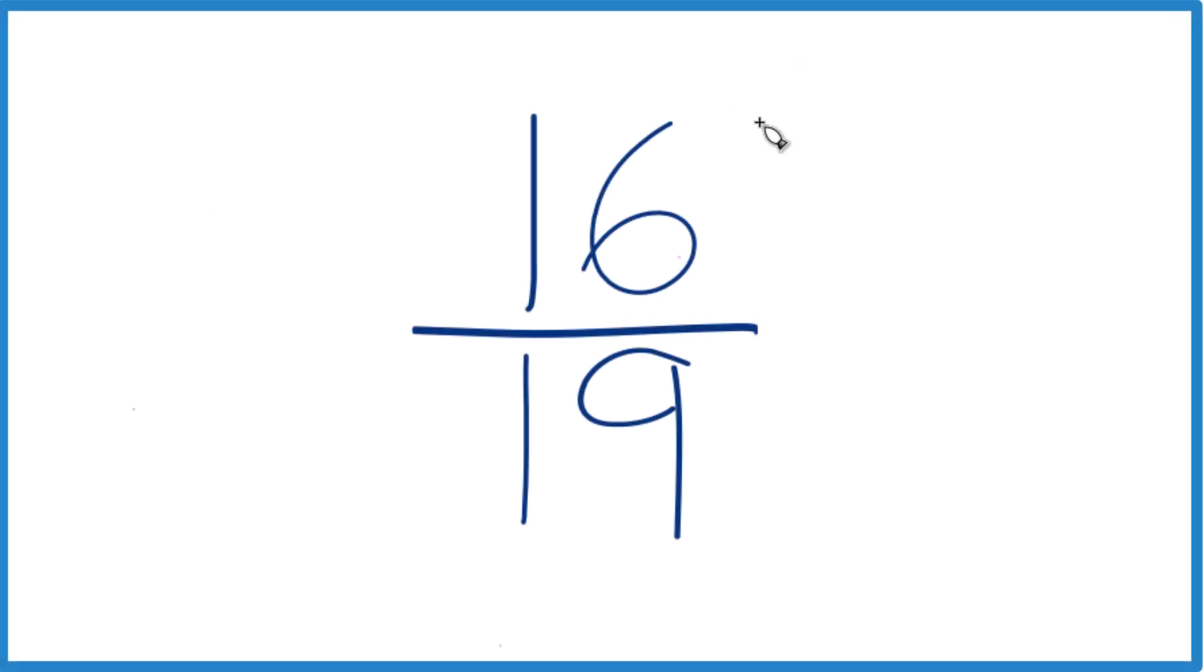If you're asked to simplify the fraction 16 19ths, that's 16 over 19 to lowest terms, here's how you do it.